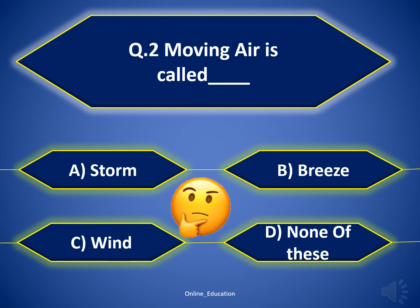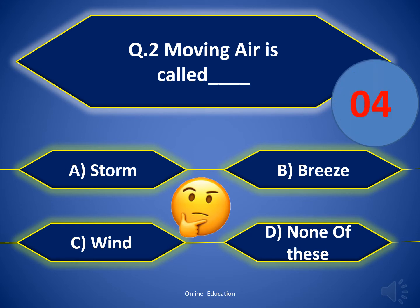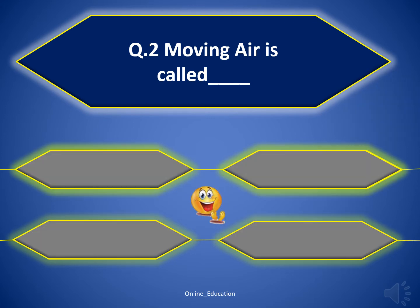Question 2. Moving air is called? The correct answer is Option C — Wind. Good job!